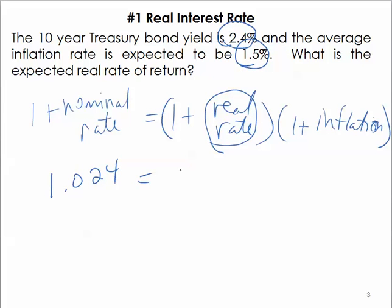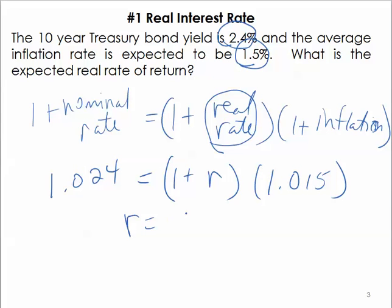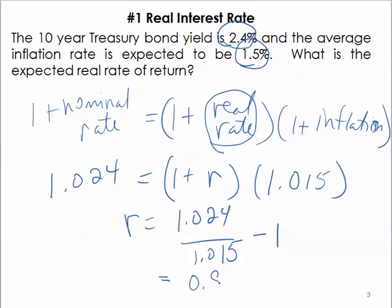Plugging in, we get 1 plus R times 1.015 equals 1.024. Rearranging, we get 1.024 divided by 1.015 minus 1, which equals 0.8867 percent.